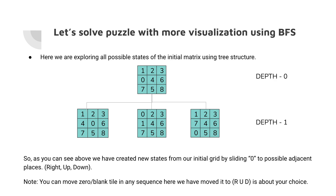In BFS, what we do is explore each and every element — all the possible states of the matrix. We explore all possible states, then pick each one and explore all of its possible states, going breadth-wise. We are exploring each and every node until we reach our goal. I first used right, then up, then down — you can use them in any order. Here you can see we have explored the very first initial matrix into three nodes — all possible nodes have been explored.